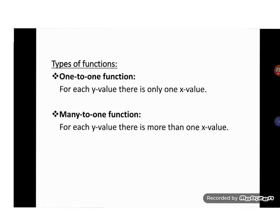When we then know that it is a function, there are different types of functions. The first one is a one-to-one function, and now it's swapped around. For each y-value or output value, there is one x-value. And then we have a many-to-one function, where for each y-value, there is more than one x-value.